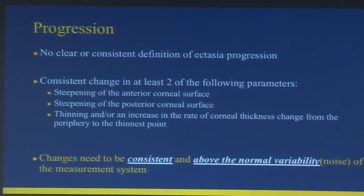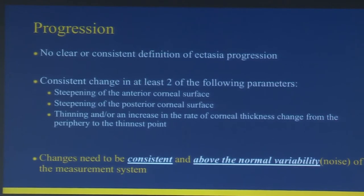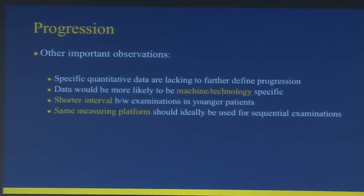Regarding progression: before the 2015 global consensus paper on keratoconus, there was no definition of what constitutes progression. The panelists agreed that there should be a consistent change in at least two of the following parameters: steepening of the anterior corneal surface, steepening of the posterior corneal surface, and thinning or an increase in the rate of corneal thickness change from periphery to thinnest point. Changes need to be consistent and above the normal variability of the measurement system.